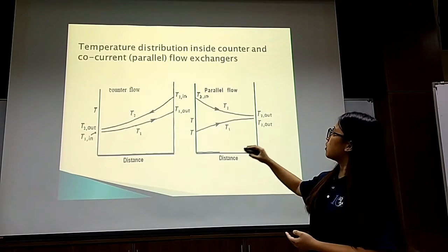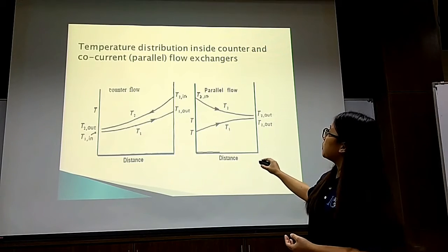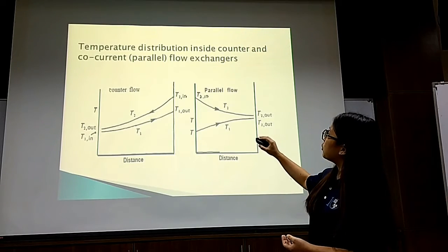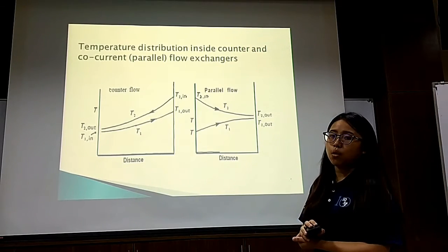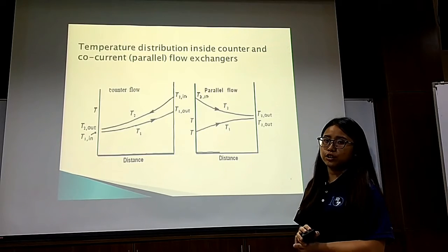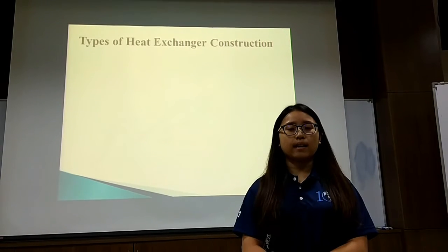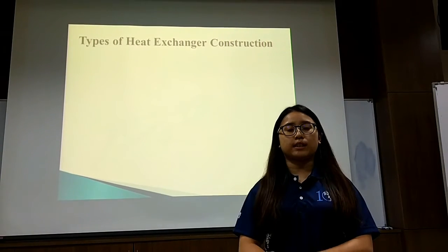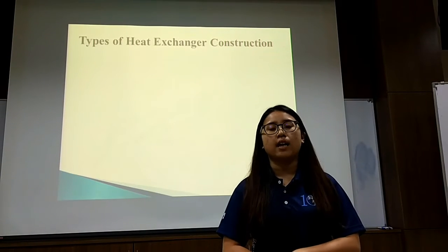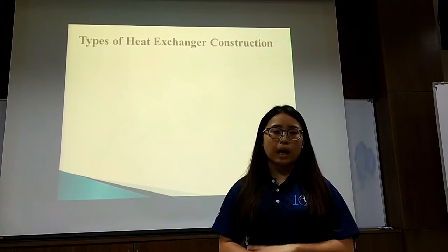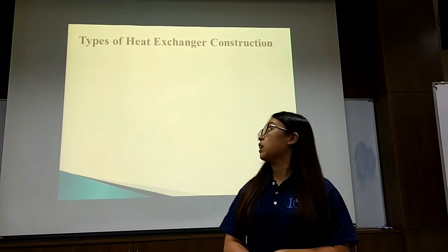This is the graph showing the temperature distribution inside the counter and co-current flow heat exchanger. I would like to explain the types of heat exchanger construction. There are two types: the tube and shell, as well as the plate type.